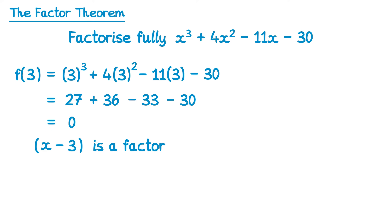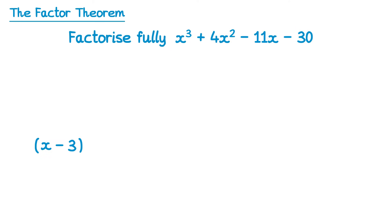We could continue guessing numbers to find the other factors, but there's a quicker way. Now that we have the factor x take away 3, we can divide it into the original polynomial using polynomial long division.